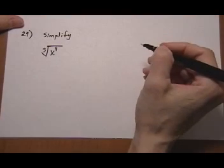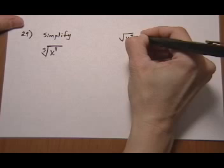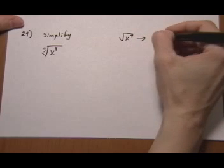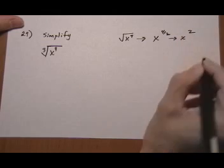Well remember for square roots, if we had the square root of x to the fourth, we just divide by 2, so it's x squared.